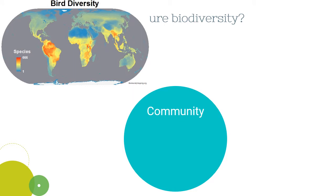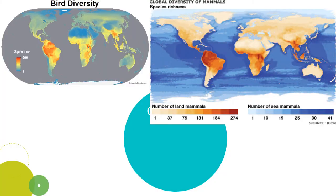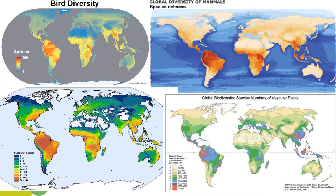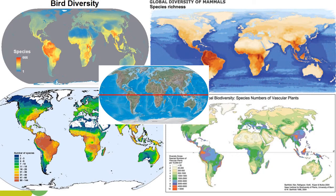Here we have bird diversity — the species richness of birds across the globe. Here we have the global diversity of mammals, both land and sea, and you can see that as the colors get darker and more saturated, there are more species per unit area. This one is amphibians. And here we have vascular plants. Comparing all of these, we can start to see a similar trend: along the equator, we tend to have higher species richness and higher diversity of organisms.